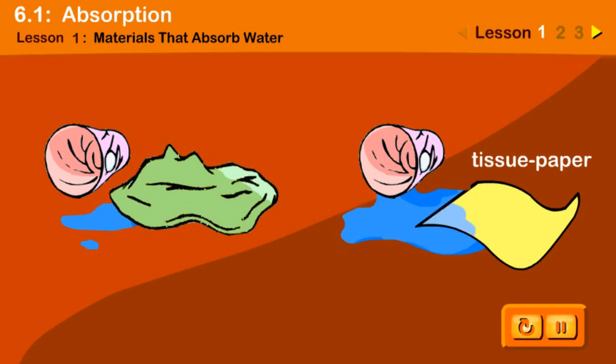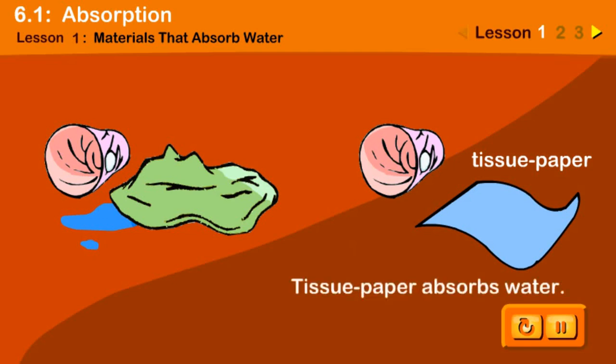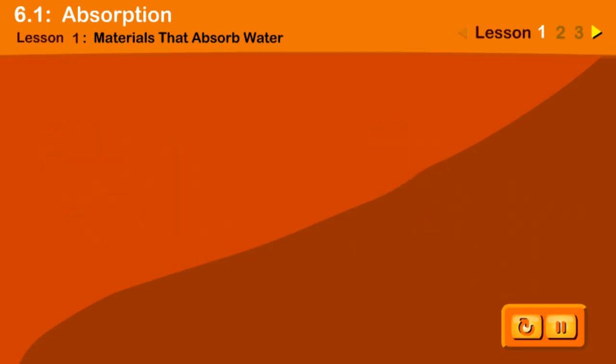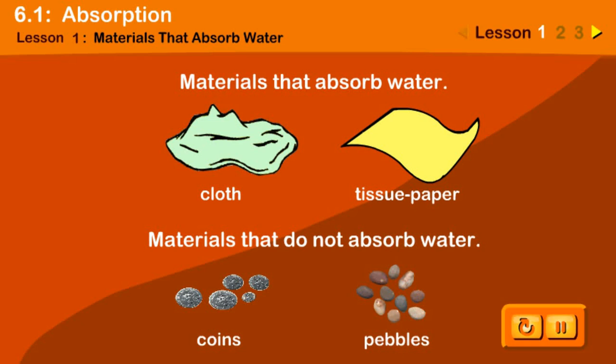Look, the tissue paper becomes wet and there is no water left on the floor. Tissue paper absorbs water. We now know that some materials absorb water and some don't.